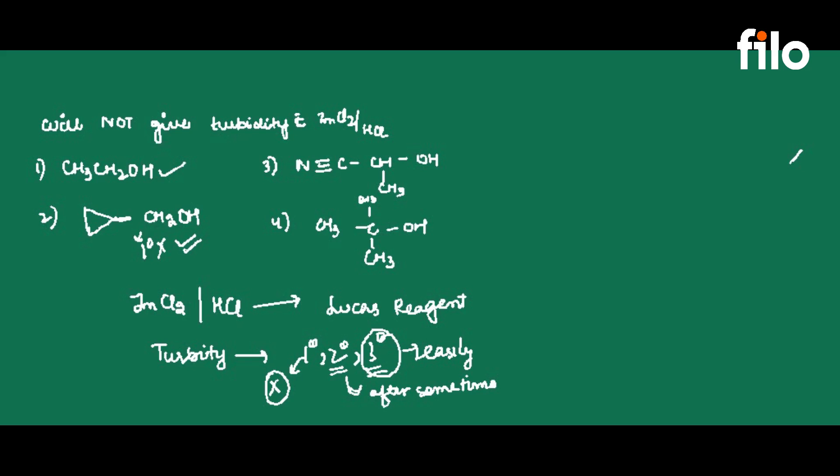The other option is 3 degree - this gives turbidity easily. This alcohol, this one degree alcohol with one group, readily does not give turbidity.